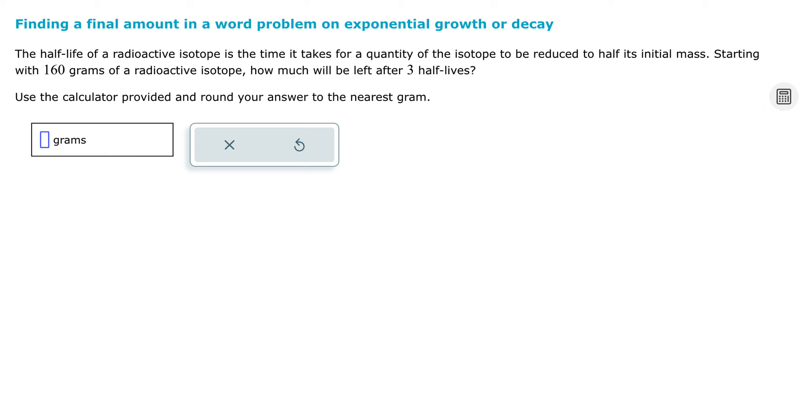This one is about half-life of a radioactive isotope, which is the time that it takes for an amount to be reduced to half of its initial mass. So half of its initial mass, we are reducing or decreasing the amount. We're starting with 160. The question is how much will be left after three half-lives.